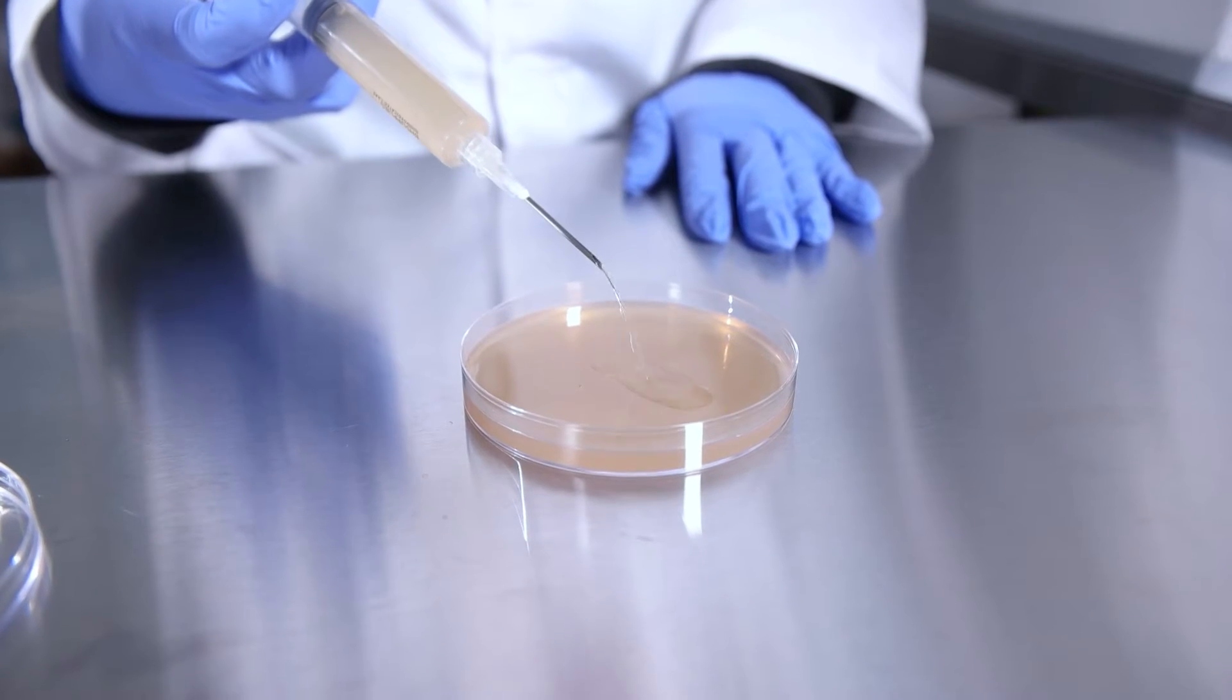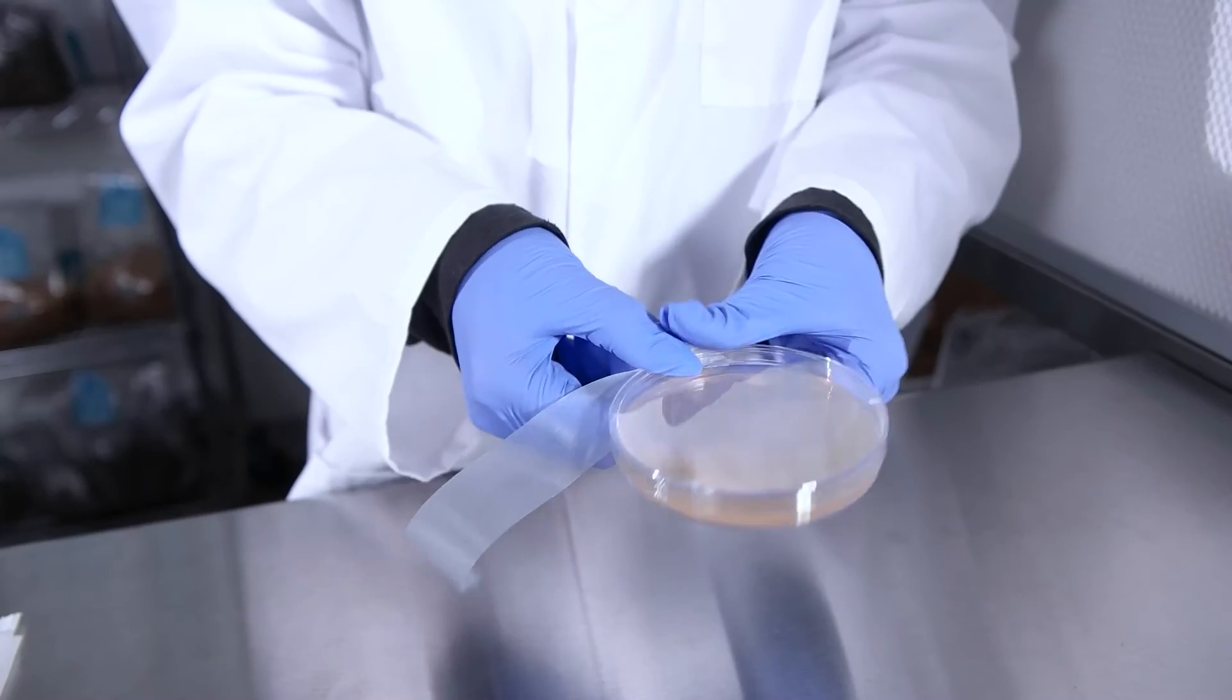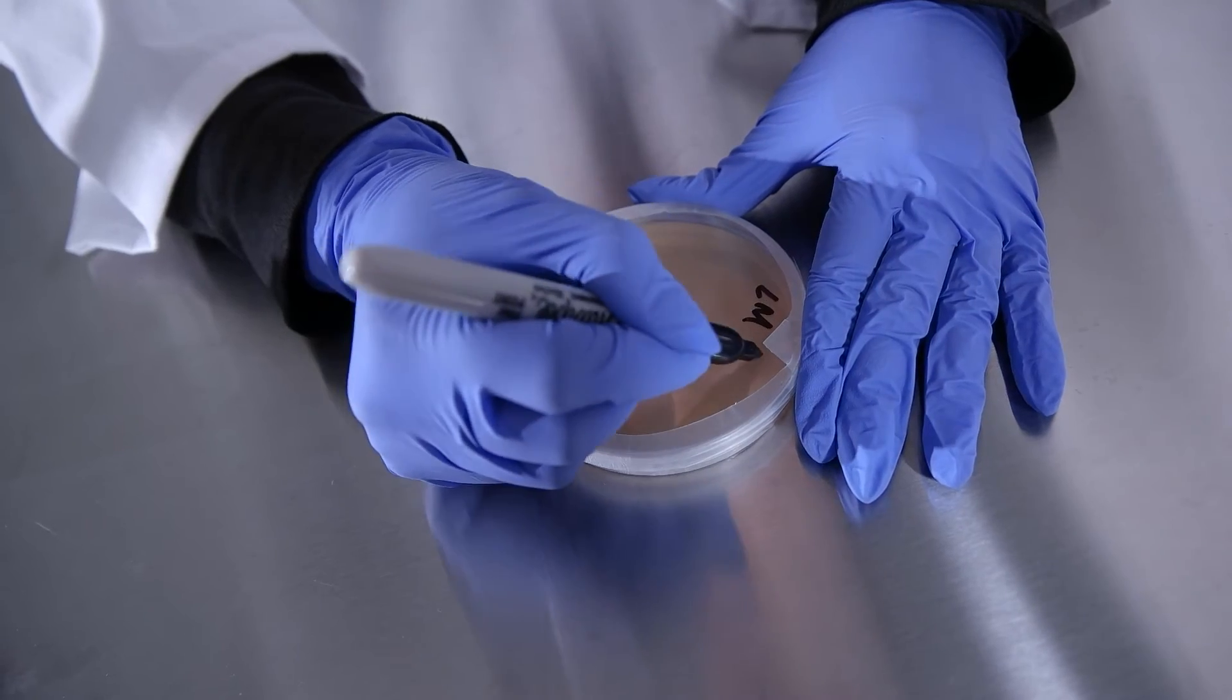In front of a flow hood or still air box, carefully inject that liquid culture into the agar plate. Then cover it up. Wrap it with parafilm and label it with all the important info like the date, strain, name, etc.